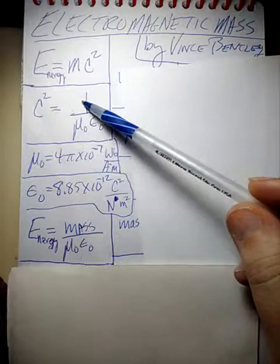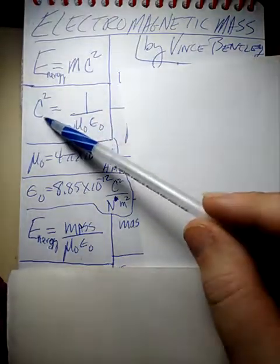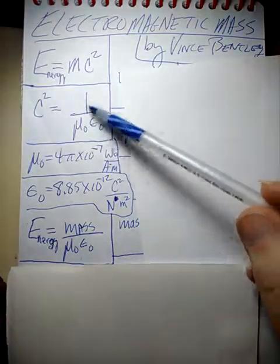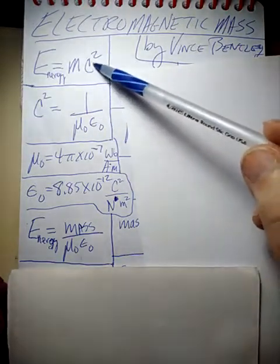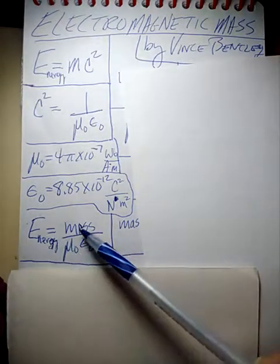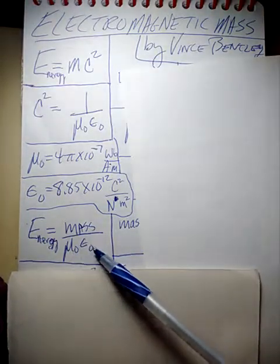So if the speed of light squared is equal to 1 over these two constants, we can take this and plug it right in there for C squared, and we get that energy is equal to mass divided by these two constants right here.